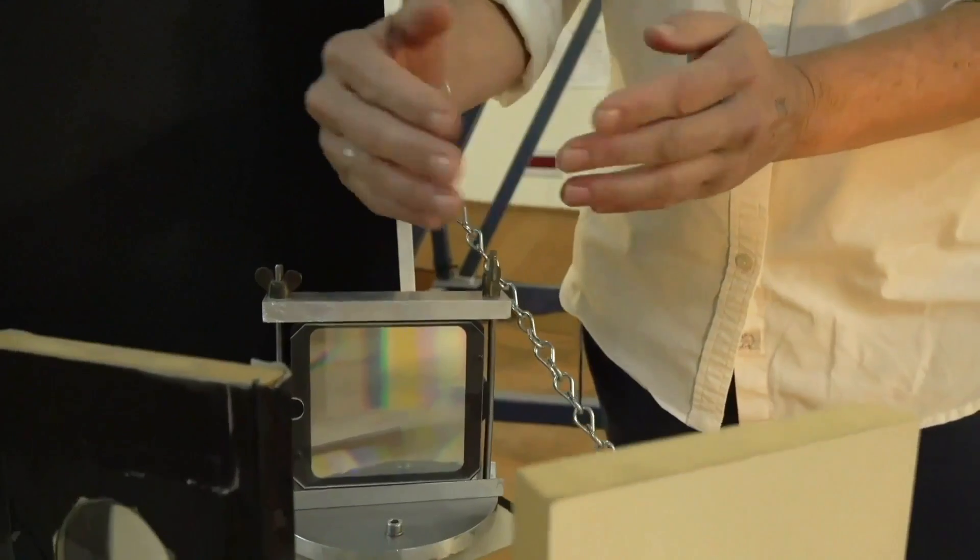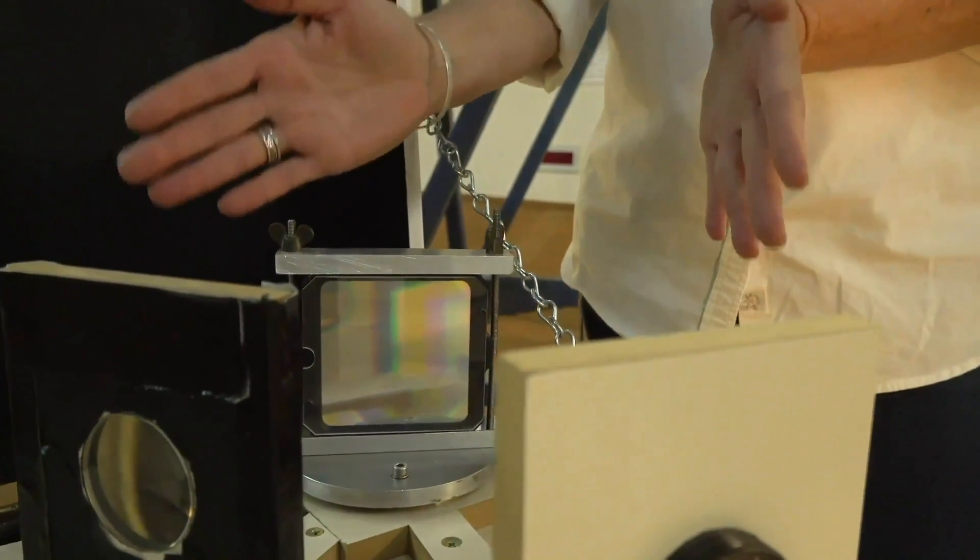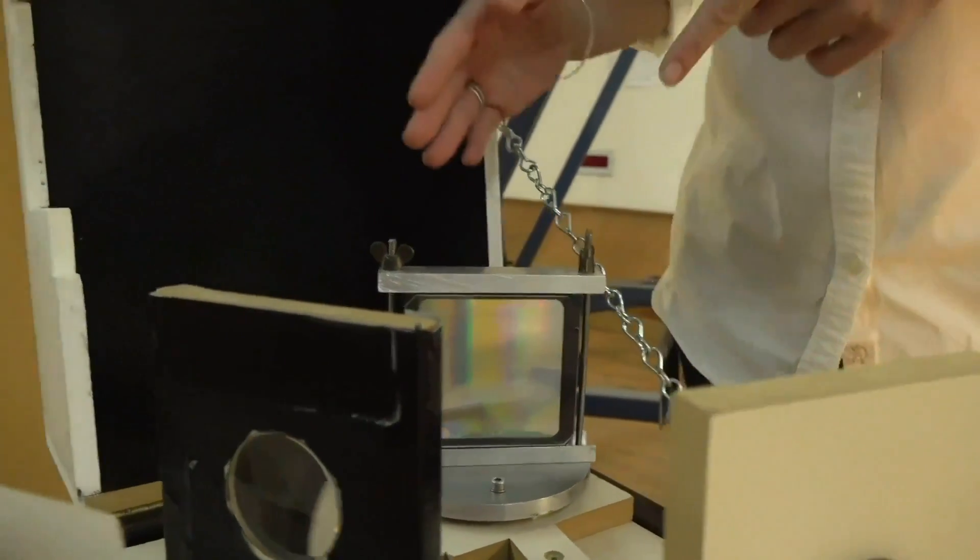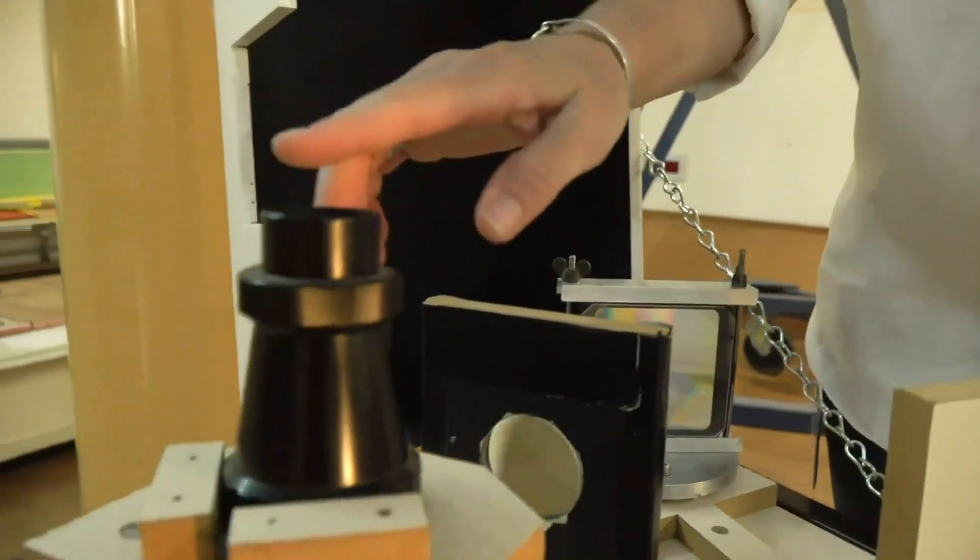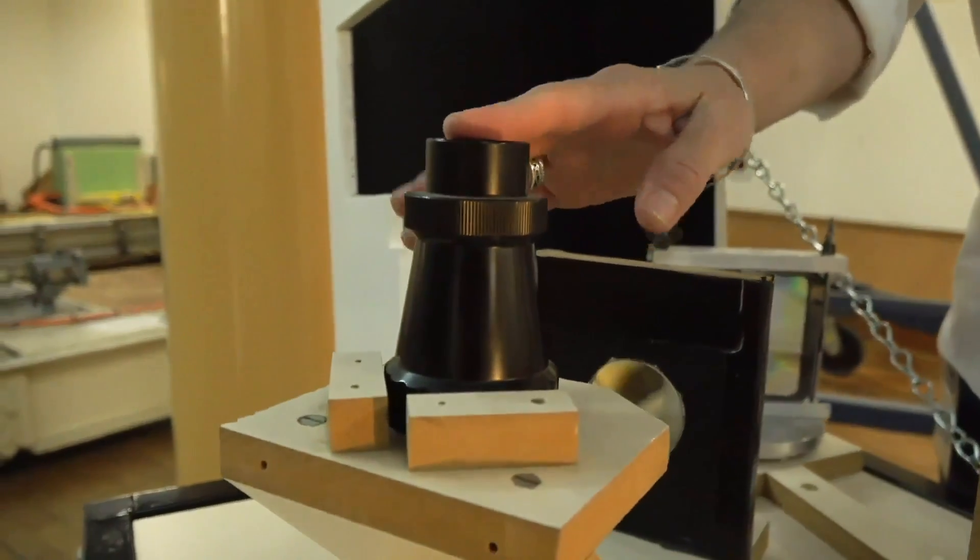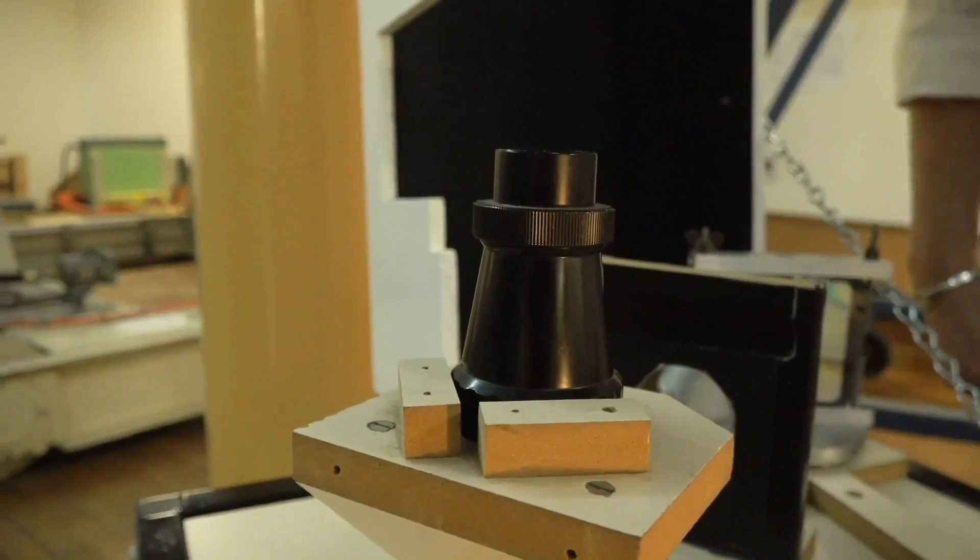The diffraction grating fans light out into the spectrum, so that rainbow. That light is then emitted into, in this case, a lens, but in a research grade spectrograph it will be cameras.